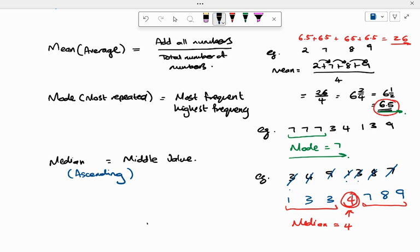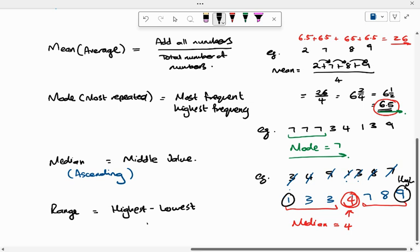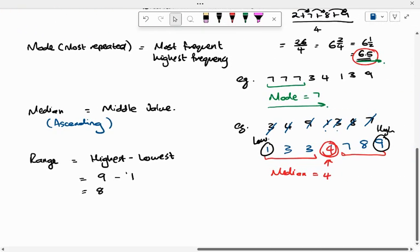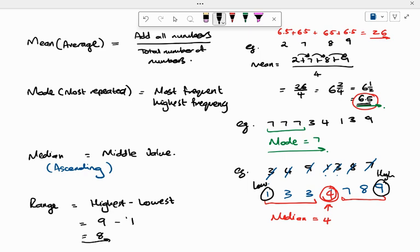And now I want to work out the range. So if I work out the range, the range is the highest minus the lowest. And so the highest minus the lowest - I can see that this number here is my highest, which is going to be 9, and this is my lowest, which is going to be 1. And so if I go 9 minus 1, it'll come to 8. And so my range here will be 8 for this example.